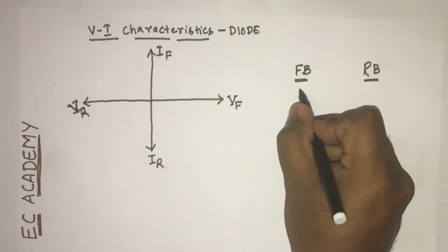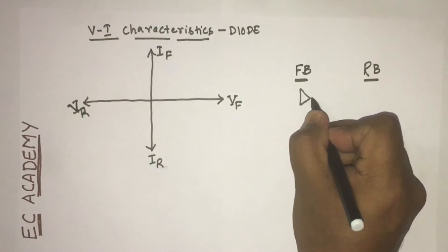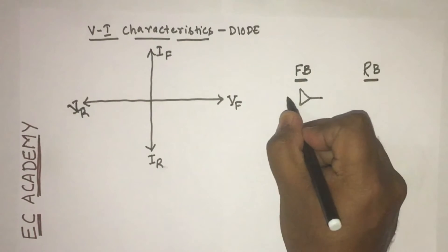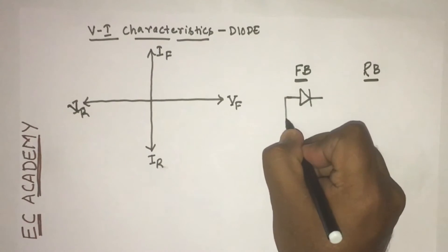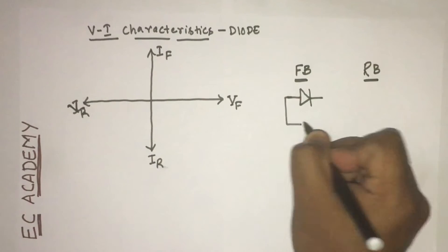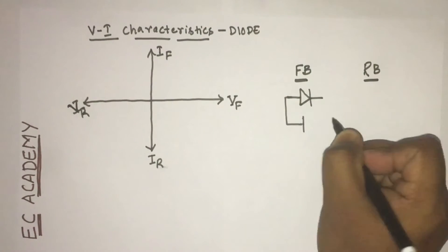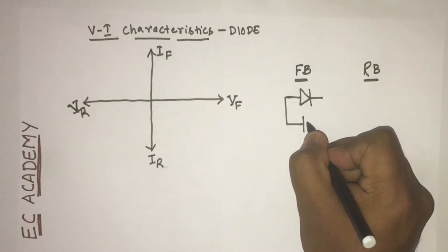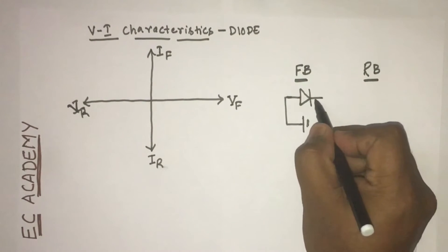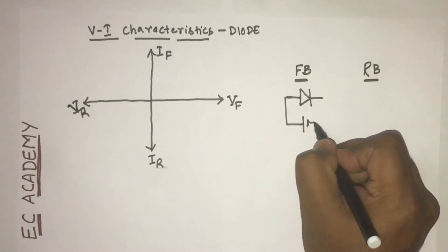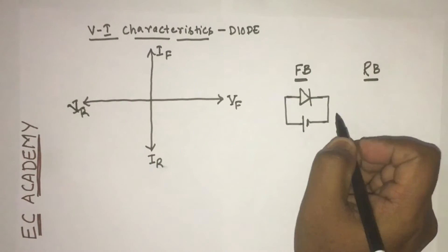In forward bias condition, the anode terminal of the diode is connected to the positive of an external voltage source, and the negative of the external voltage source is connected to cathode.